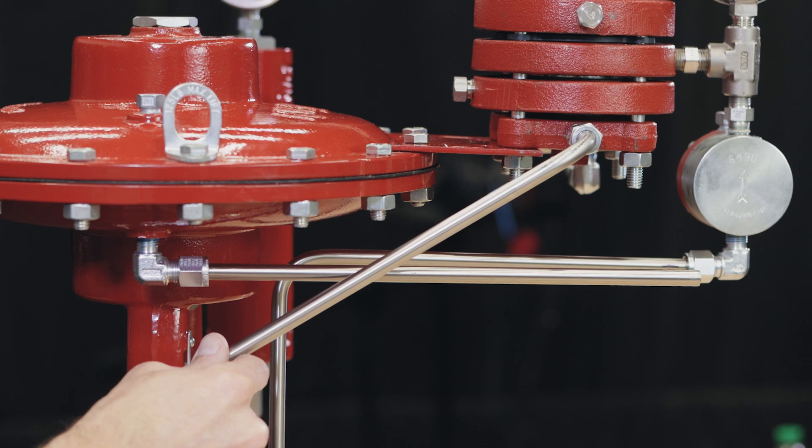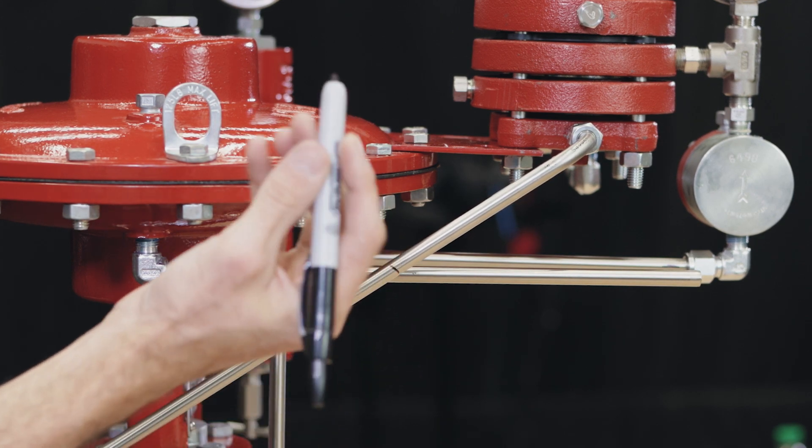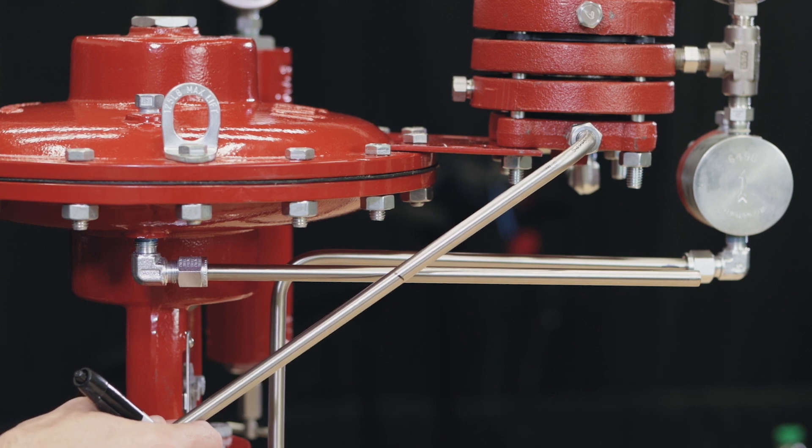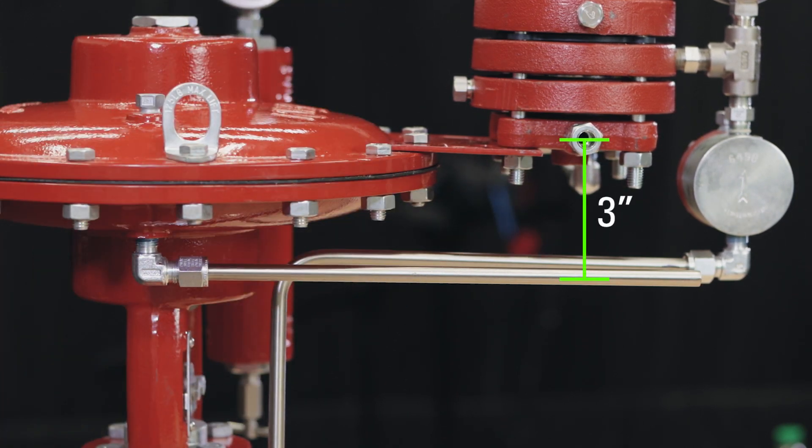For this piece, the offset just needs to clear the bonnet or any obstructions. Make your mark and bend the tube. But for this bend, we're not bending for a certain angle. We're bending to achieve that 3 inch offset height.